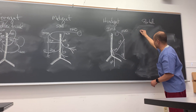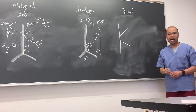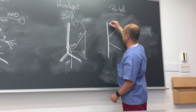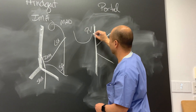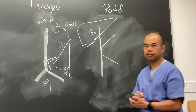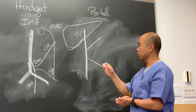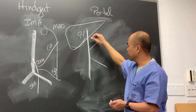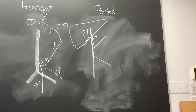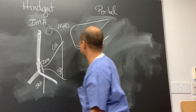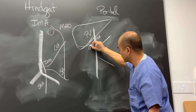The portal venous system is made up of enormous veins that form a 'K' shape. The portal vein goes into the liver. The portal triad includes the portal vein, the proper hepatic artery, and the common bile duct.